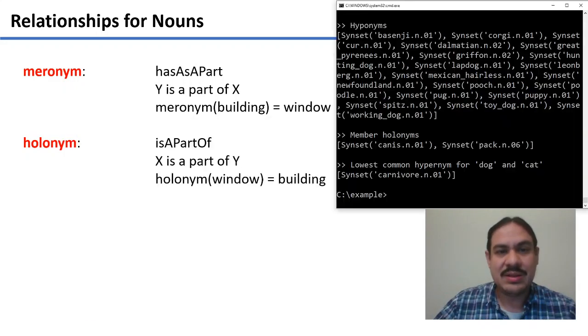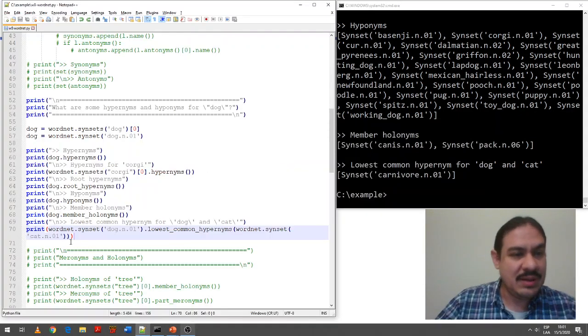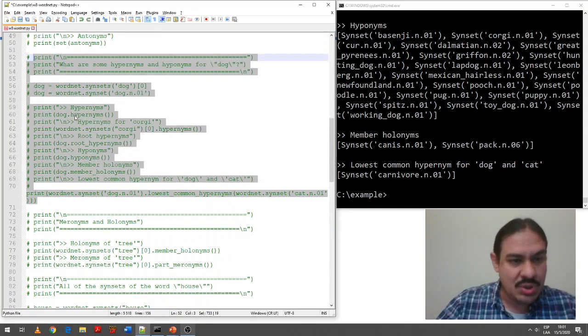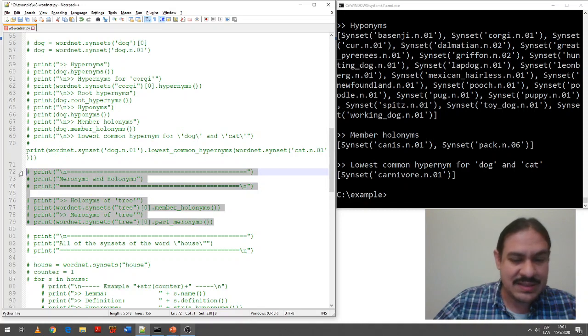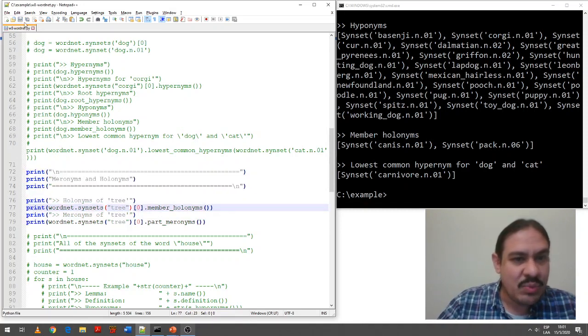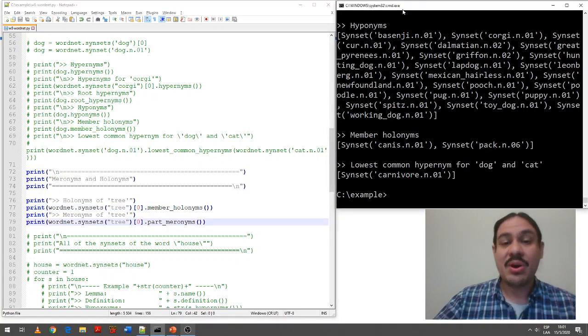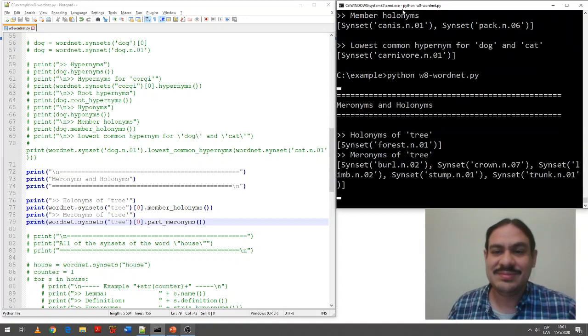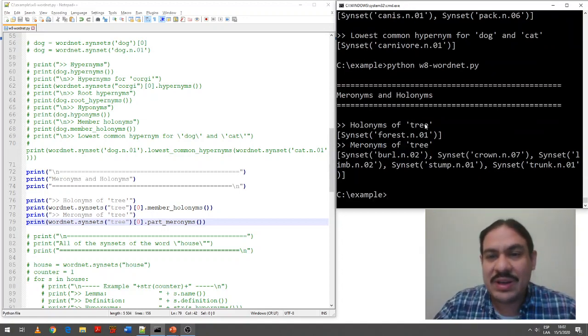Let's take a look at them very quickly. Let's comment out the dog part and bring this example for meronyms and holonyms. So, as you can see, we are asking the computer for the holonyms of tree and the meronyms of tree to see what are the parts of a tree. So, a tree is a part of a forest.